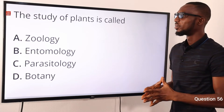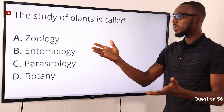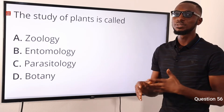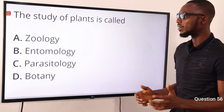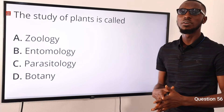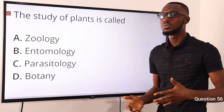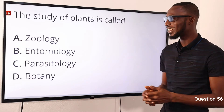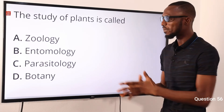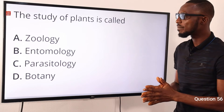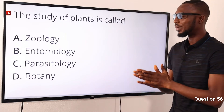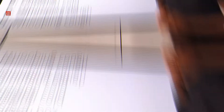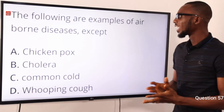Number 56: the study of plants is called what? Zoology means studying animals. Entomology is the study of insects in relation to man, other organisms and their environment. Parasitology deals with parasites. Then we have botany, which is the study of plants. So the correct option is option D — botany is the study of plants.